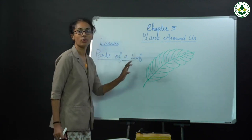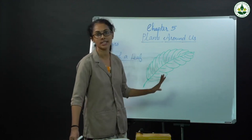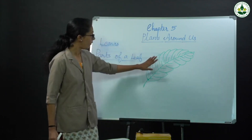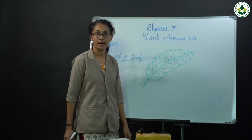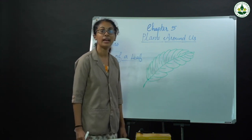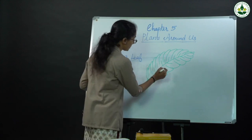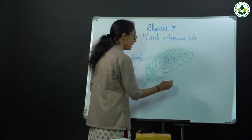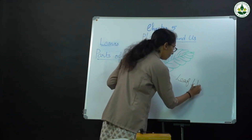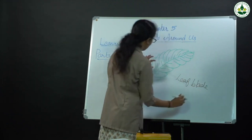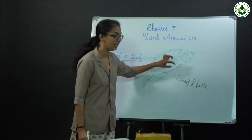Next, parts of a leaf. The first part — the flat part of a leaf is known as the leaf blade. This flat part is known as leaf blade.